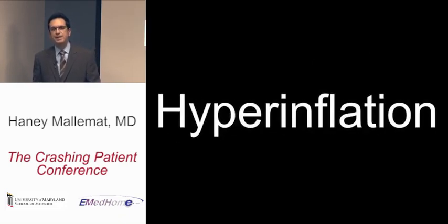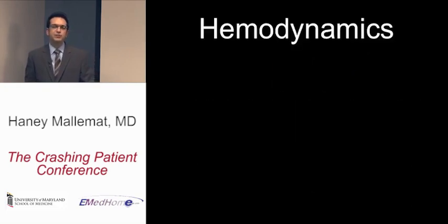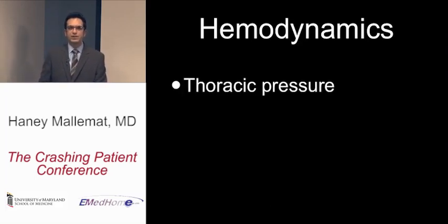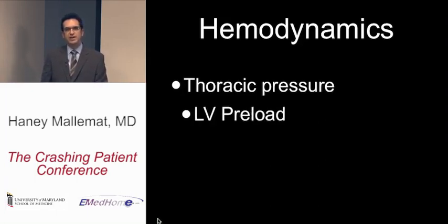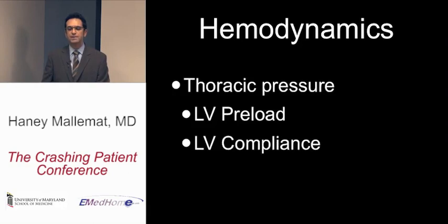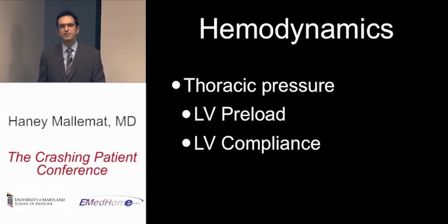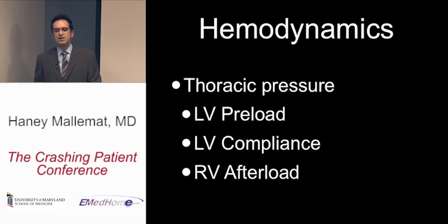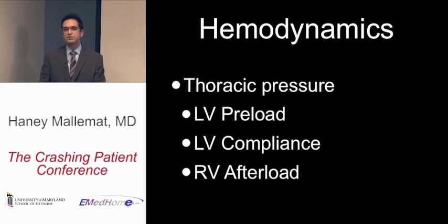The most common reason for this patient's low blood pressure is hyperinflation of the lungs. Hyperinflation really hurts hemodynamics. High intrathoracic pressure decreases preload by decreasing venous return to the right side of the heart — less filling of the right heart means less filling of the left heart, reducing cardiac output. Increased intrathoracic pressure also reduces left heart compliance, making the ventricle stiffer. And hyperinflation increases RV afterload, further decreasing left ventricular filling and cardiac output.